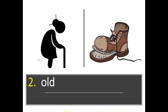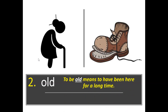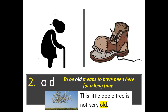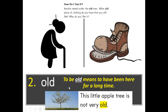The word is old. To be old means to have been here for a long time. Example: This little apple tree is not very old. How do I use it? Sandra rested under the old tree. What old piece of clothing do you have that you still like? Think about that — what old piece of clothing do you have, and why do you like it?